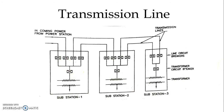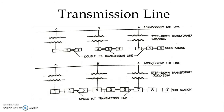We have four line circuit breakers, one transformer circuit breaker, and one transformer to step down the voltage. The extra high-tension transmission line is tapped from suitable points and feeds power to the substation. The voltage is stepped down at the substation, and substations are fed power through the double high-tension transmission line.